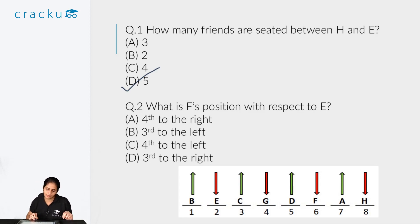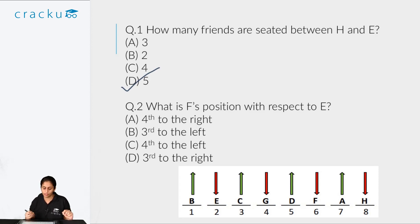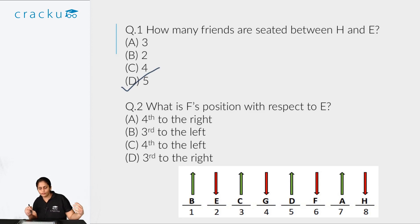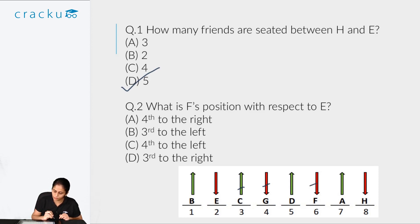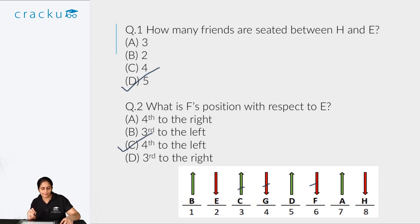The second question asks what is F's position with respect to E. The crucial thing to remember is that E is facing south. If you imagine you are facing south — the direction E is facing — then F is to the left of E, and counting: 1, 2, 3, 4 — F is fourth to the left of E. Therefore the answer is option C.